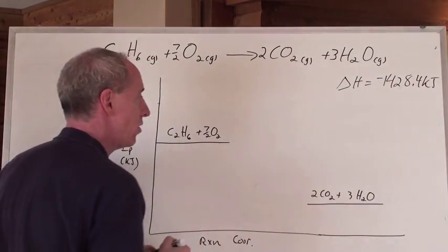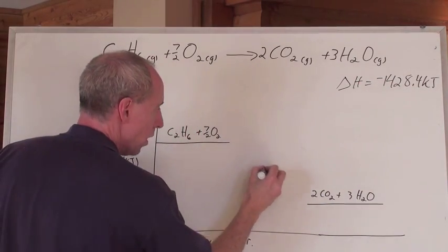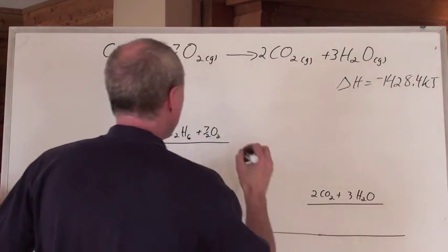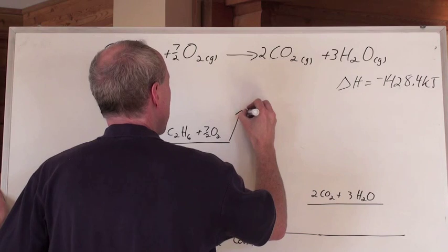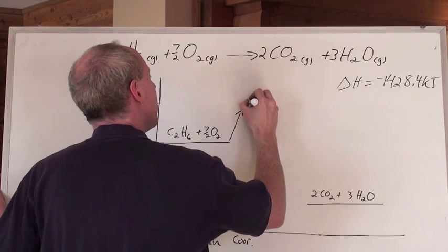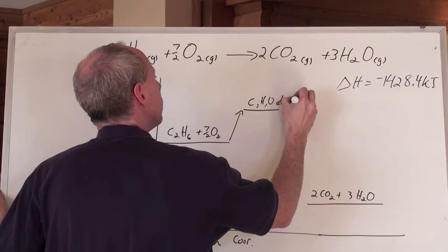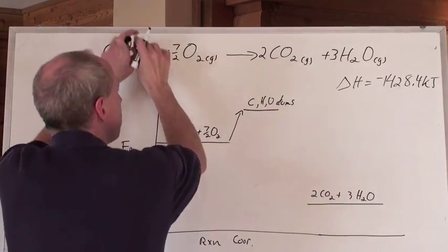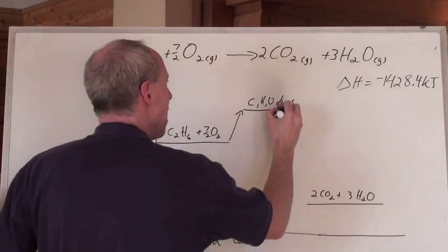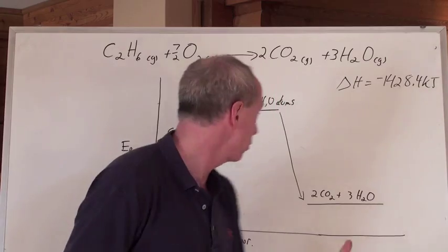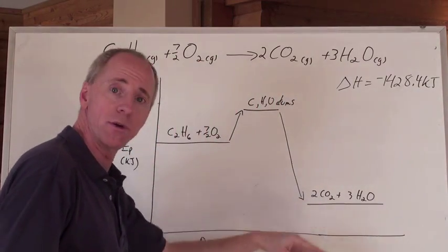This represents the change in energy. You can do one arrow going from here to here, but basically the best way to draw that is to say, first thing we're going to do is add energy. And we're going to add energy to make C, H, and O atoms out of all of these right here. We're going to add energy to break these apart into atoms, and then they are going to release energy to form that. And that's the best way to draw an exothermic reaction.